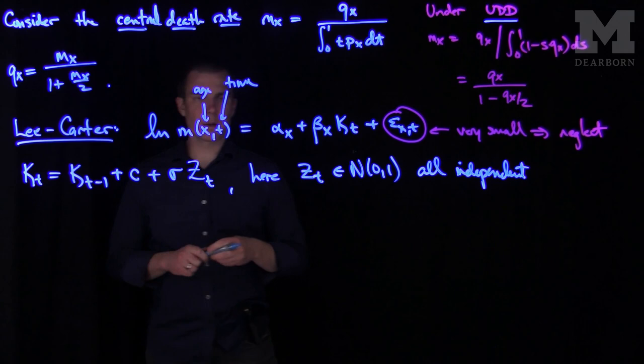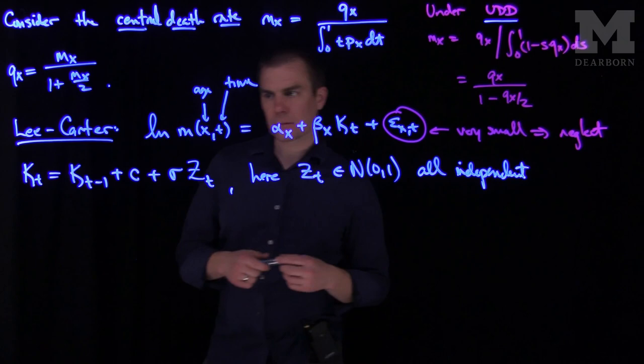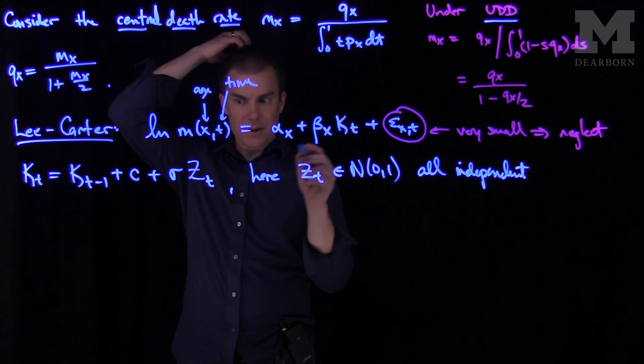And so this is the Lee-Carter model. Now what we can do with this model is analyze it and make some observations. The first thing we can note is that once we have this relationship, if I just look at a particular fixed k, this is given to us.